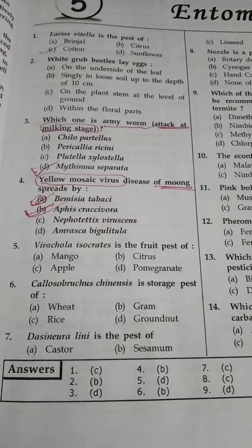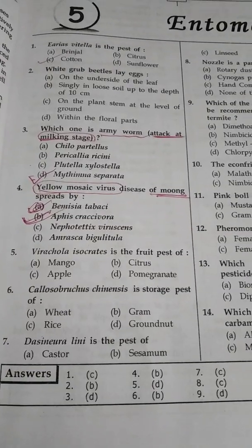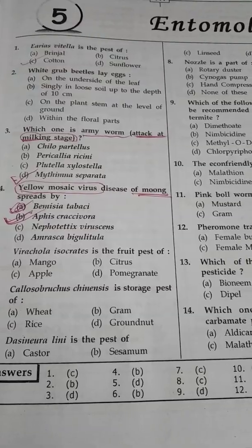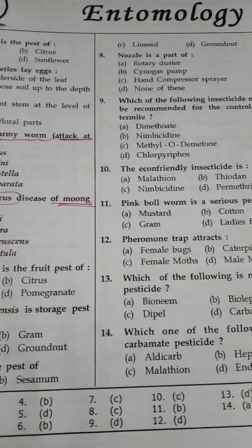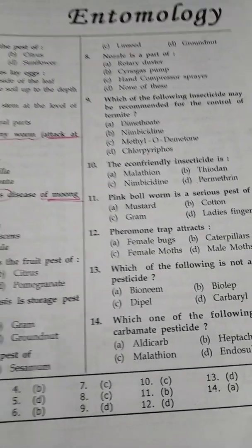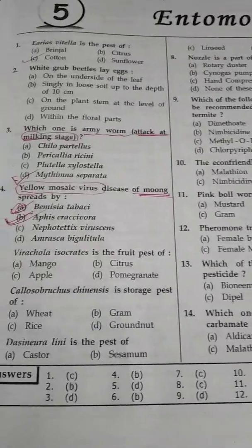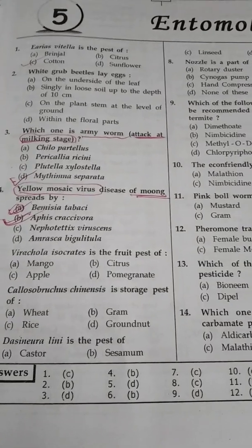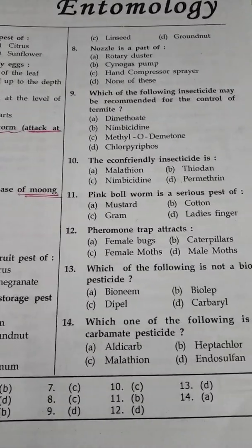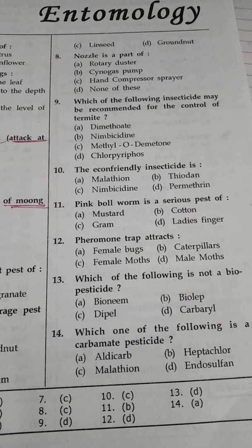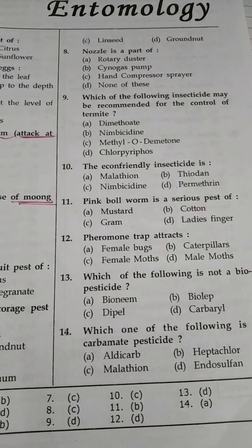Question number 7: Dicinura linae is a pest of — option A castor, option B sesamum, option C linseed, option D groundnut. The answer is linseed — the hint is in the name: 'linae' suggests linseed.